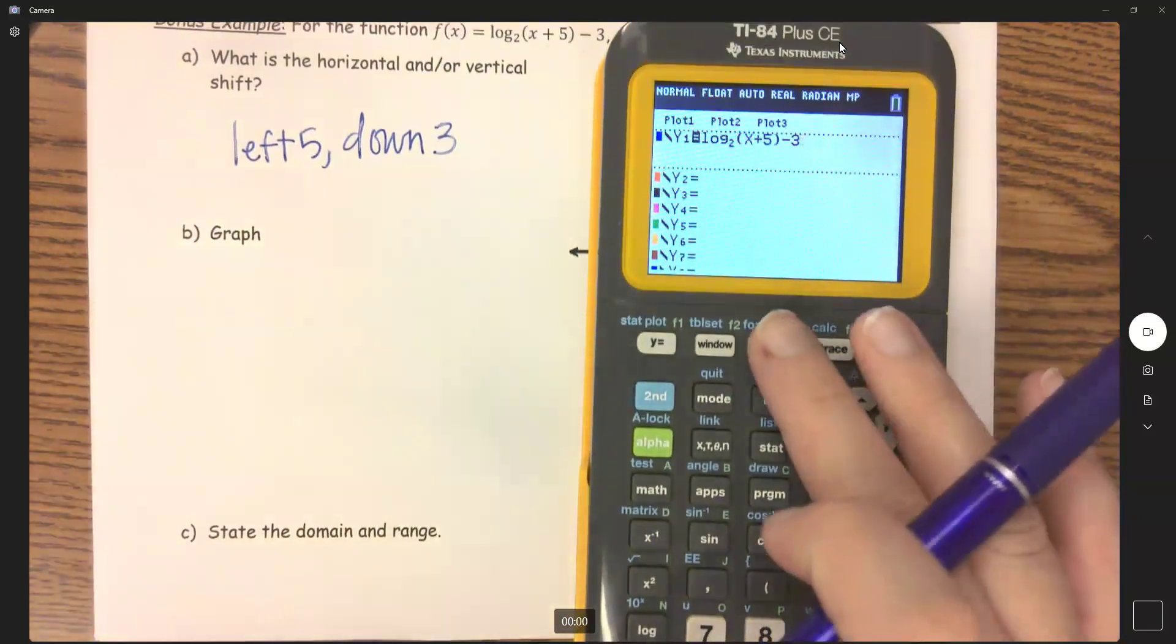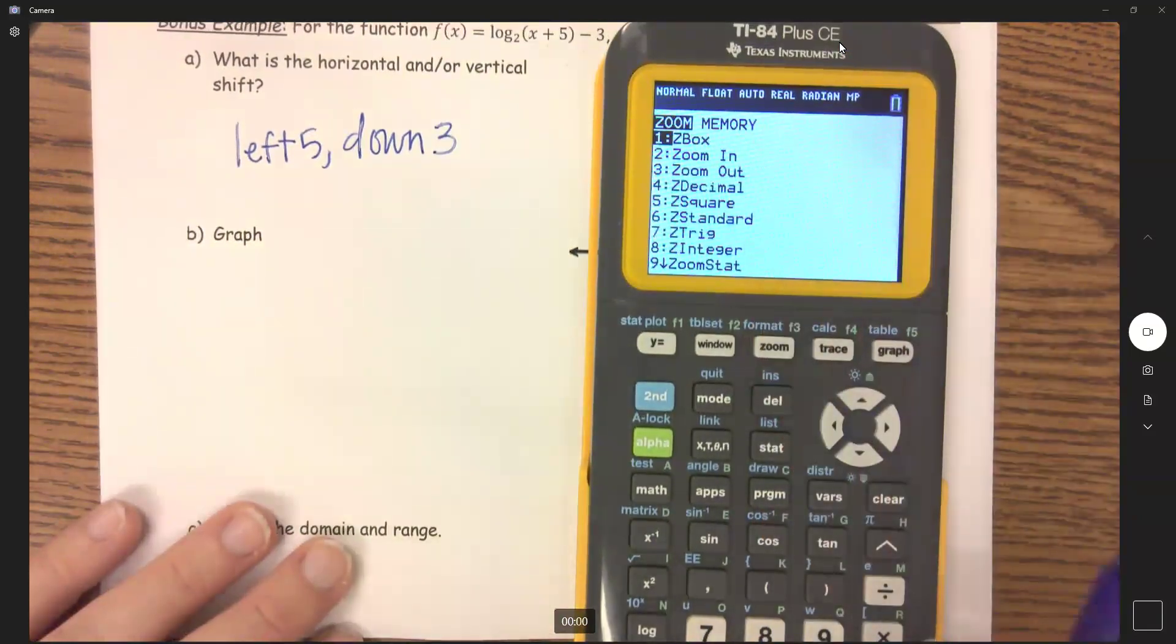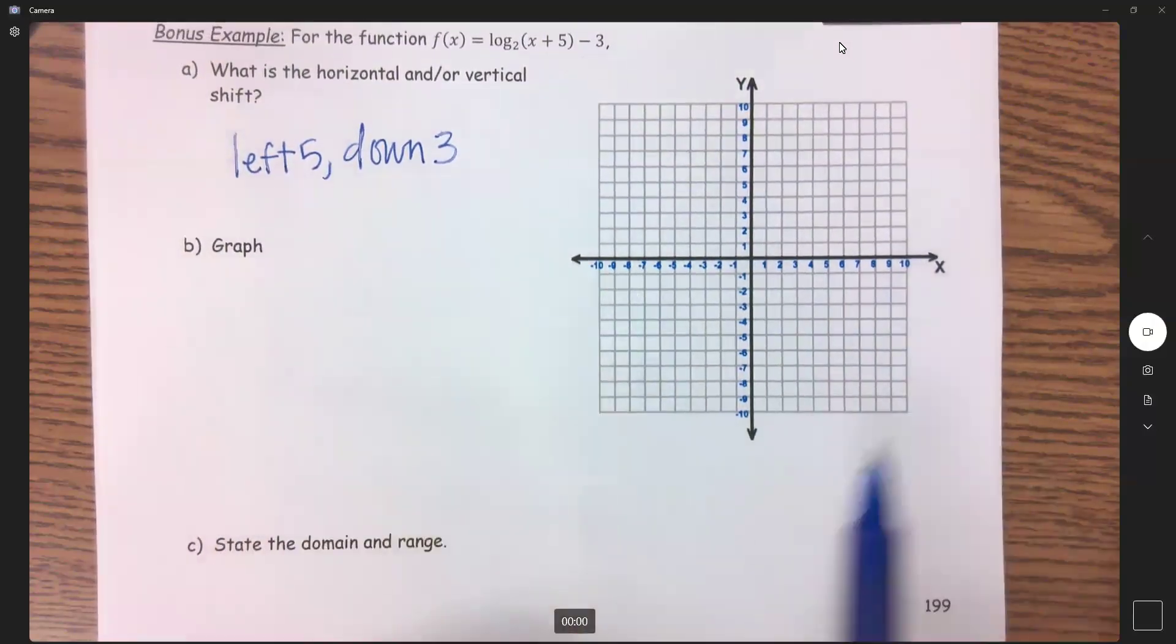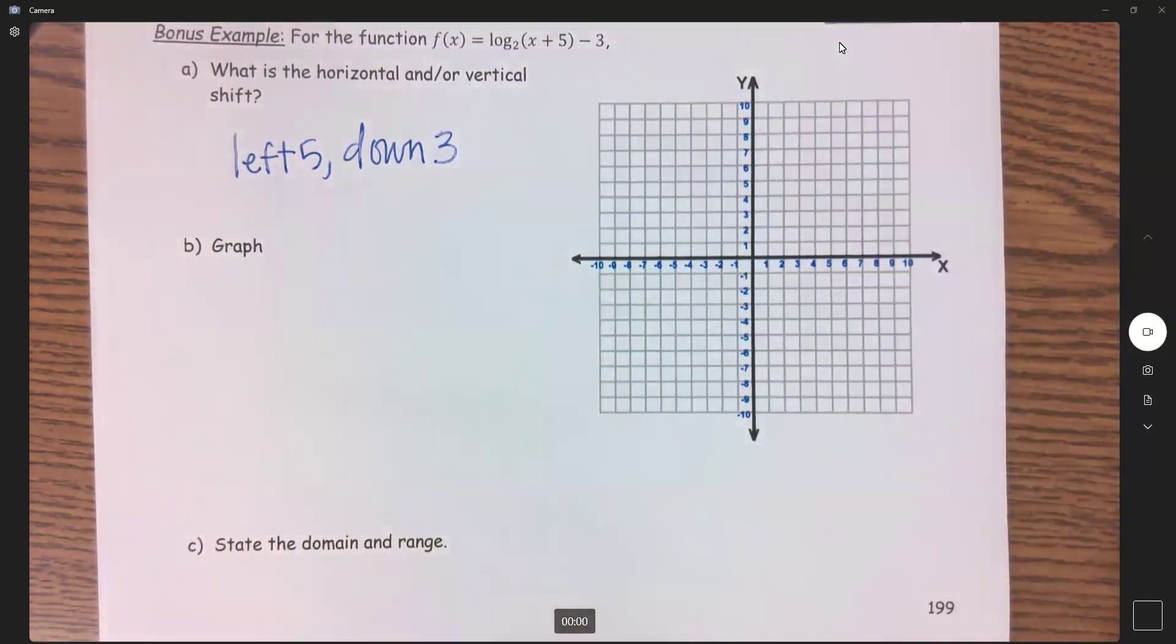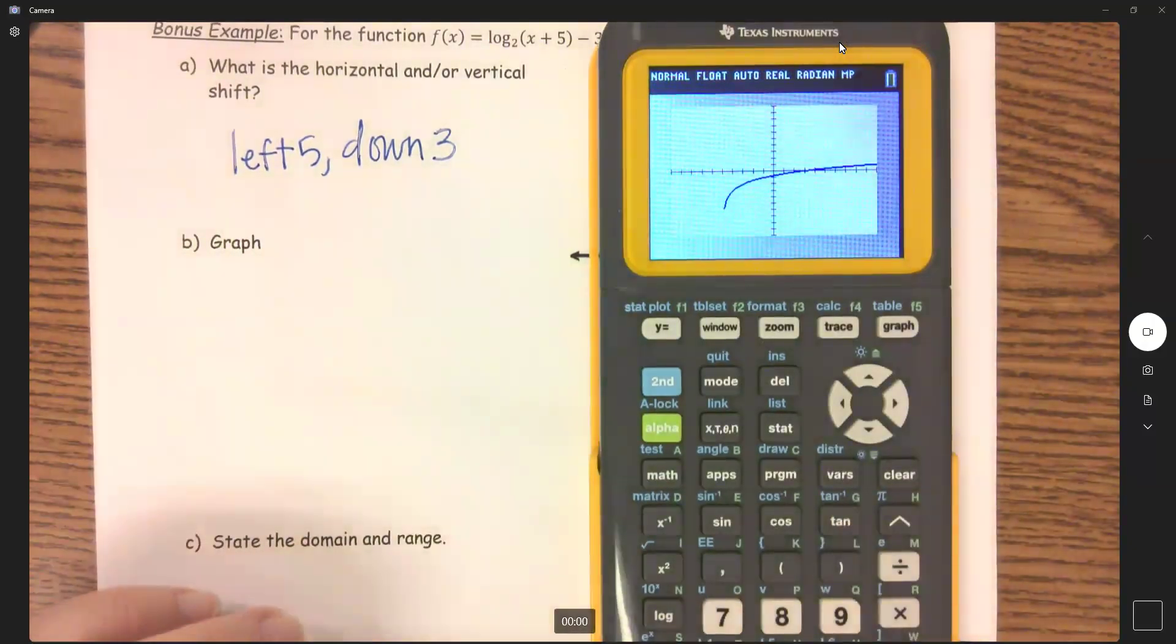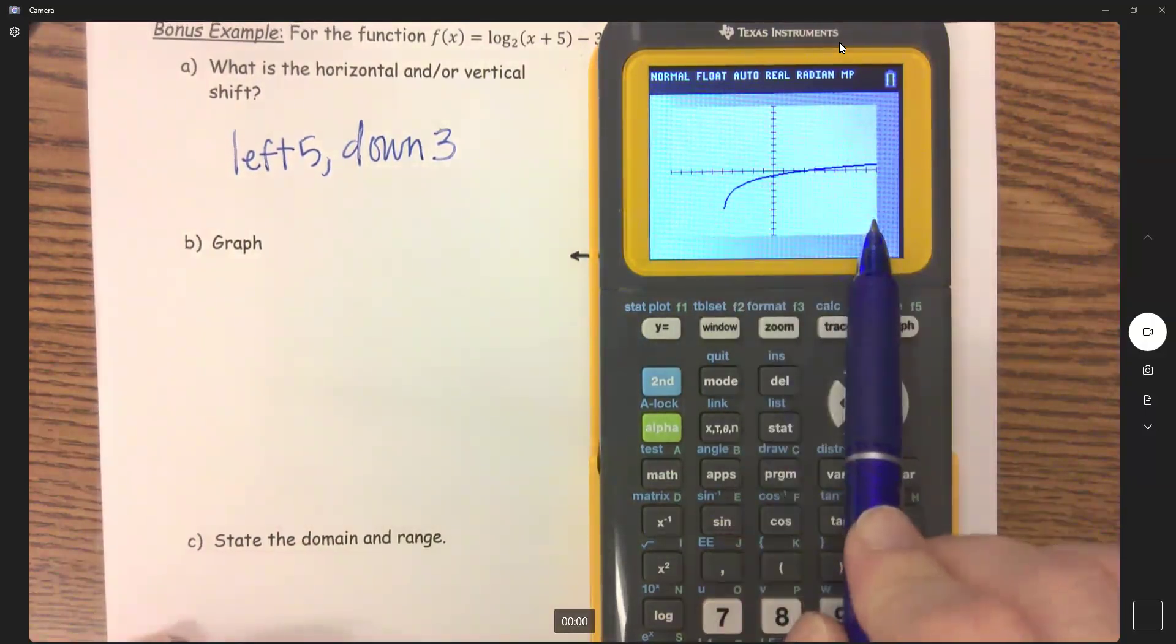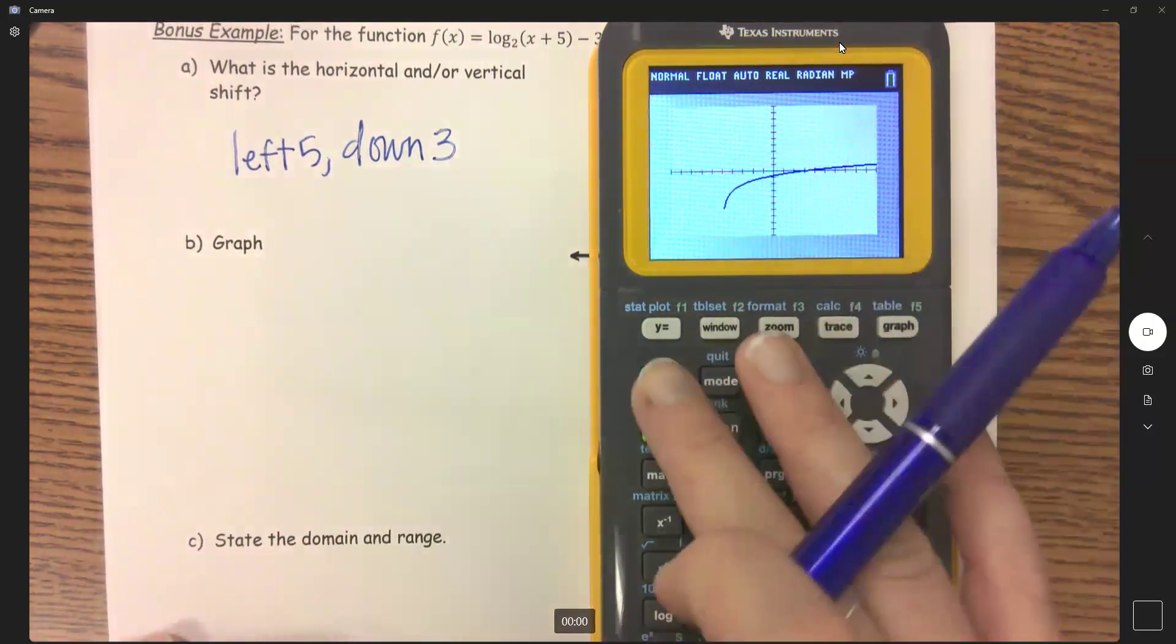So now I'm going to go zoom six, because this is a standard negative 10 to 10, negative 10 to 10, scale of one. So here's my graph. We're going to talk about this graph in a second, but I'm first going to get a table.